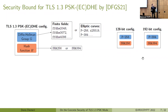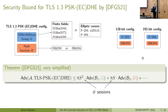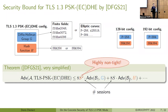Different combinations of these building blocks result in different levels of security — for example, a 128-bit or 192-bit security configuration. If we look at the bound given by Dowling et al. in a simplified way, you can see that this bound is highly non-tight due to a quadratic factor that the reduction to the security of the group loses in the number of sessions the adversary interacts with.